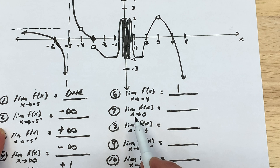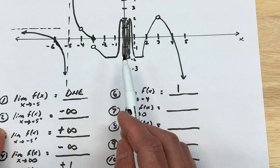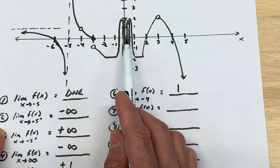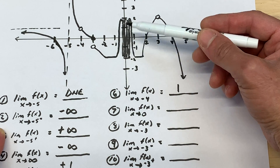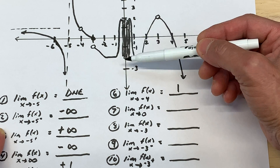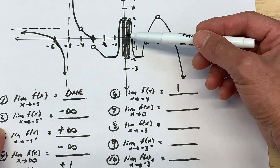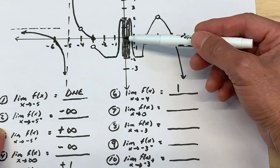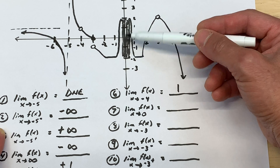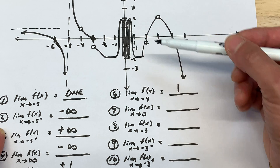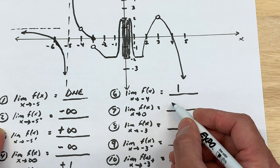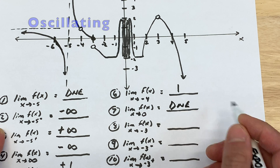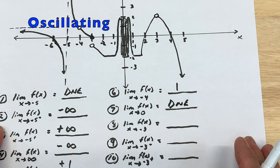For number seven: the limit as x approaches 0. Approaching 0 from the left and from the right, you can see the graph bouncing back and forth between negative 2 and positive 2. Even if you were to zoom in on a graphing calculator, you'd still see that ricochet effect — it's not approaching one constant value. So this limit does not exist; you could say it's oscillating.